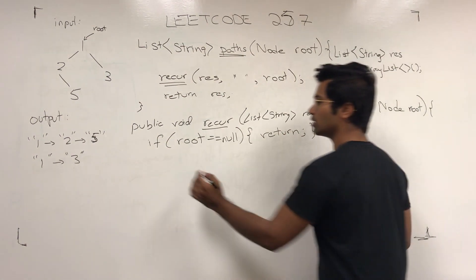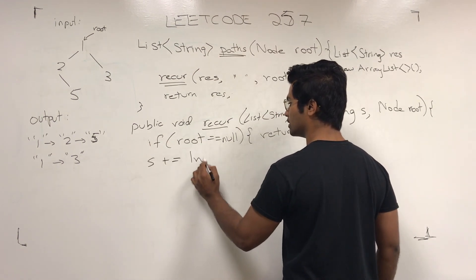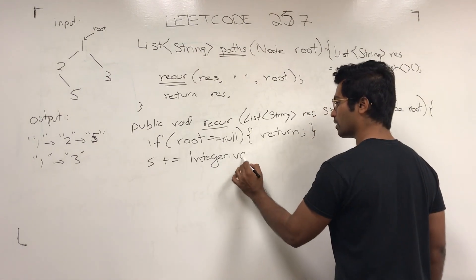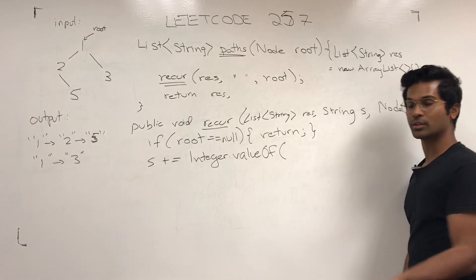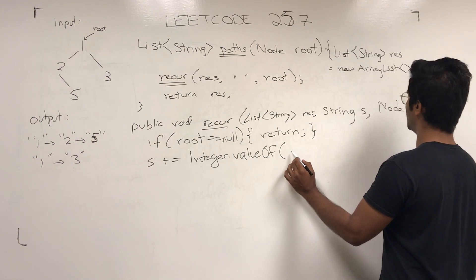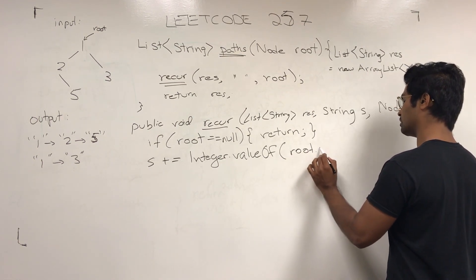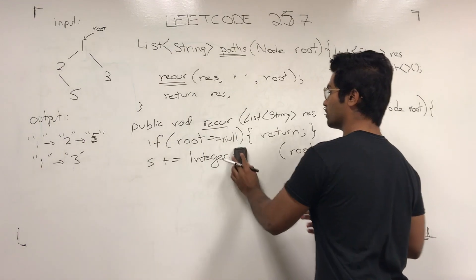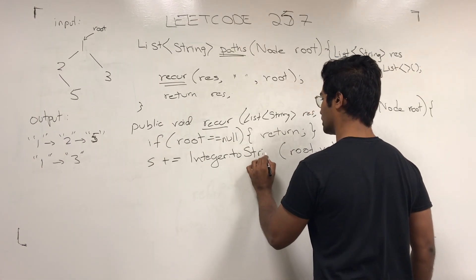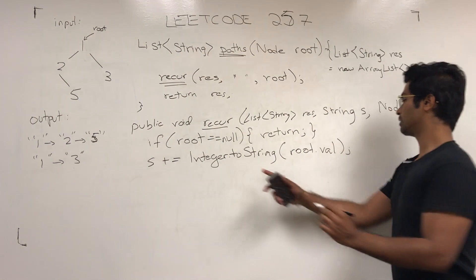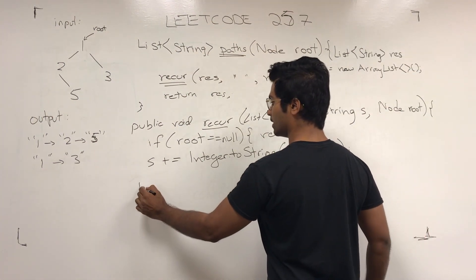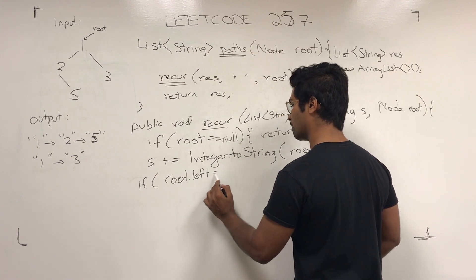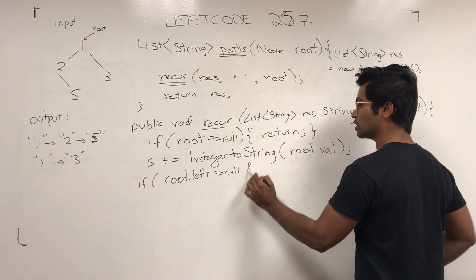So s is going to get appended with Integer.toString — we're converting it to string — and root.val. Then if the left and the right child are both null, we can pretty much return at this point, because we've hit a leaf node.